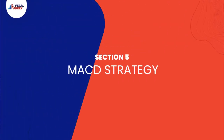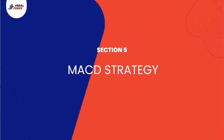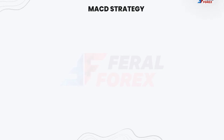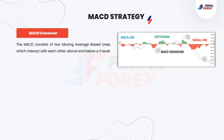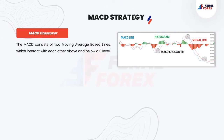Section 5: MACD Strategy. MACD Crossover. The MACD consists of two moving average-based lines which interact with each other above and below a zero level.